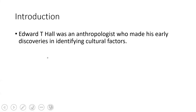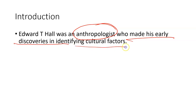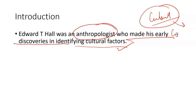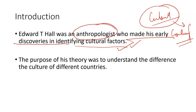Let us have a brief introduction about the topic first. Edward T. Hall was an anthropologist who made his earlier discoveries in identifying cultural factors. He was interested in understanding the cultural differences among different cultures and different countries. He explored different cultures, just like Hofstede, and derived some cultural factors on the basis of which a country differs from other countries.